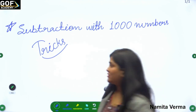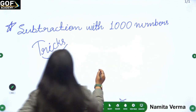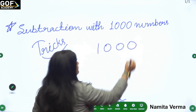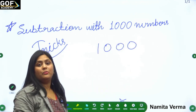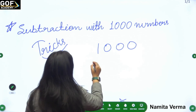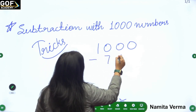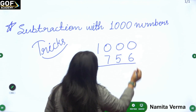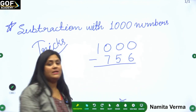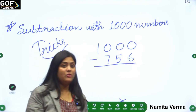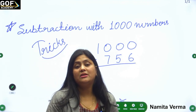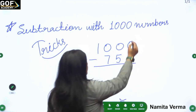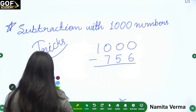Suppose you have the number one thousand minus seven hundred fifty-six — that is what I have written on the board: 1000 minus 756. Firstly, what we have to do is look at the place value. This is called the ones place.